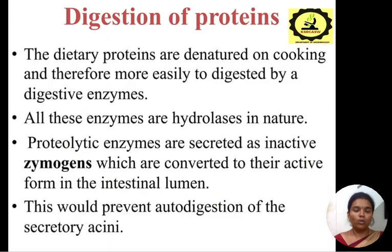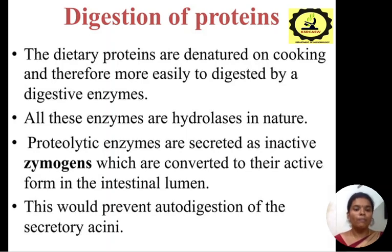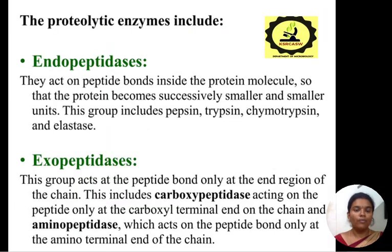Next is the digestion of protein. The dietary proteins are denatured on cooking and become more easily digestible by digestive enzymes. All these enzymes are hydrolytic in nature. Proteolytic enzymes are secreted as inactive zymogens, which are converted to their active form in the intestinal lumen. This would prevent auto-digestion of the secretory tissues. The proteolytic enzymes include two types: endopeptidase and exopeptidase.